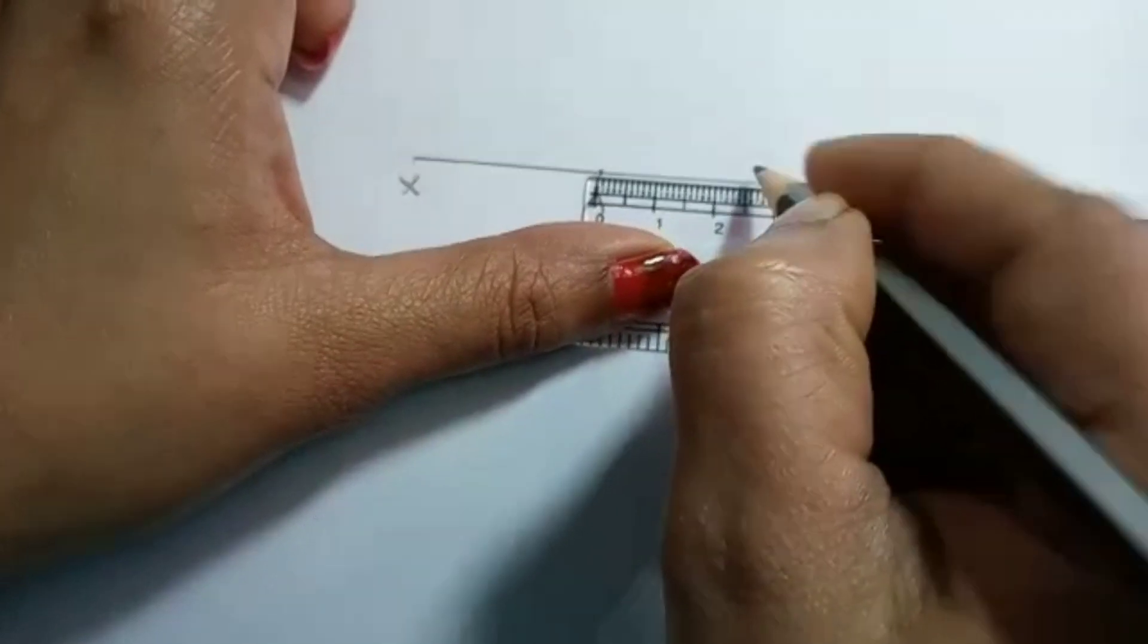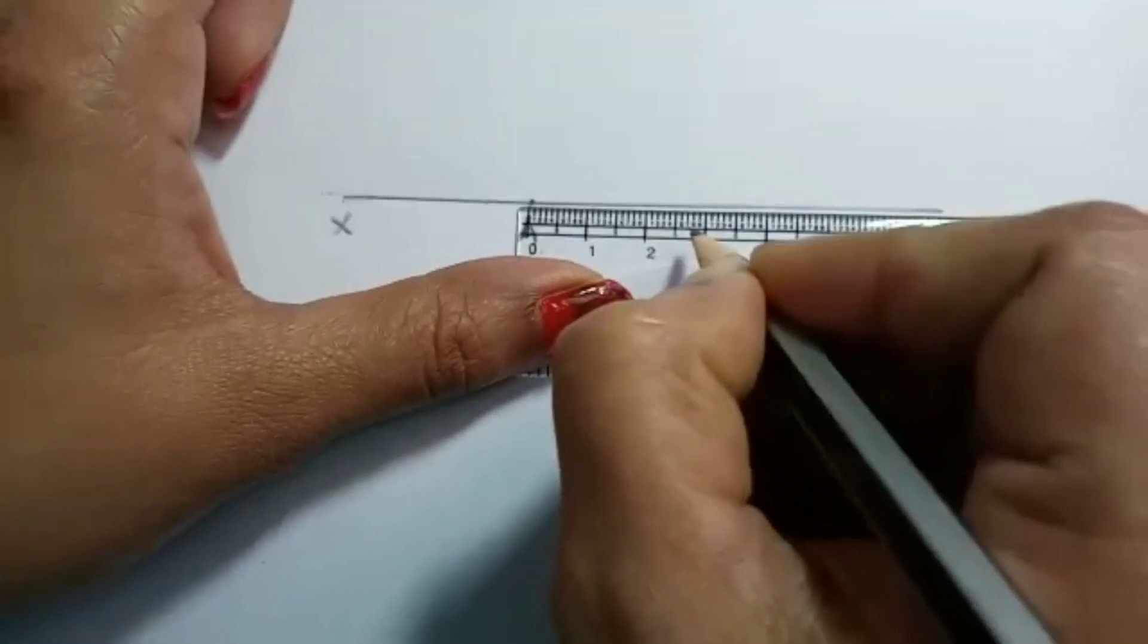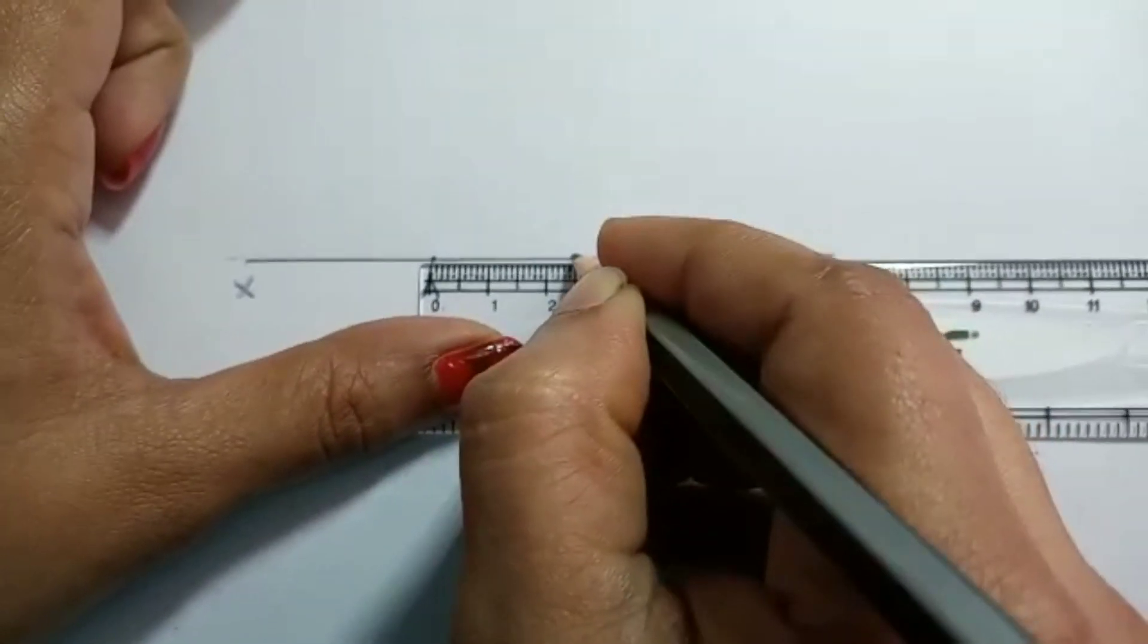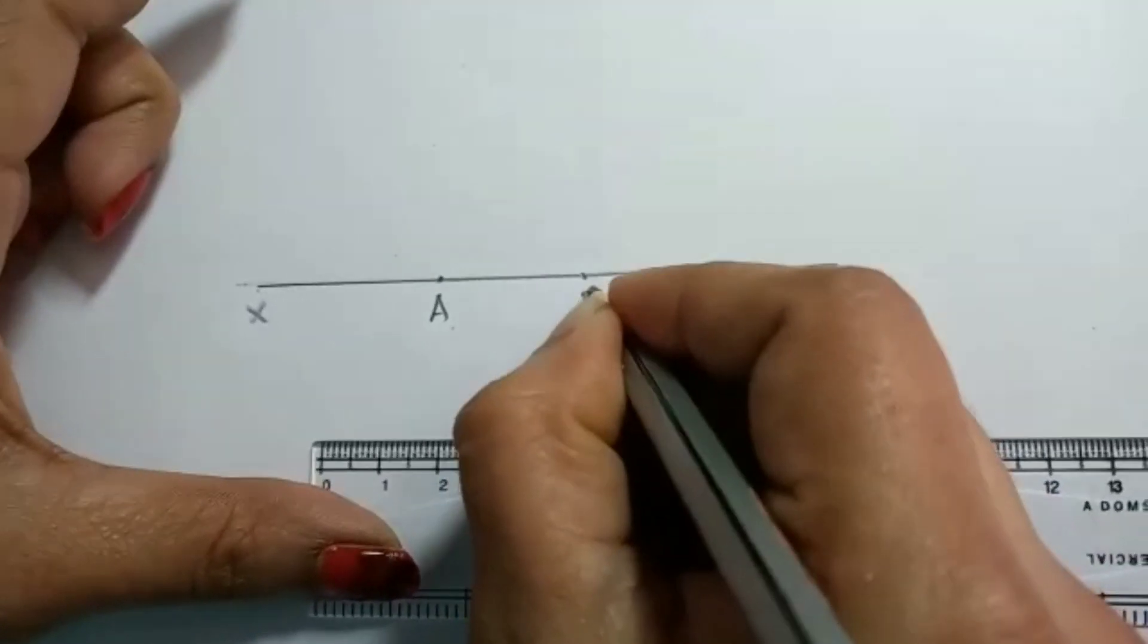So it comes here. So it is not 3, it is between 2 and 3. So in between there is a middle line, the smallest small one. So there you mark one point and that will be your B.